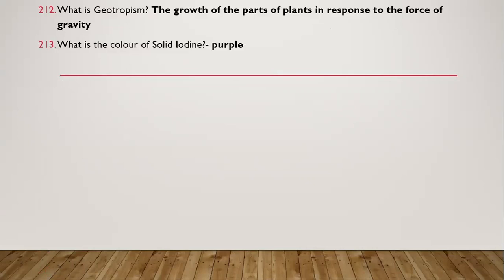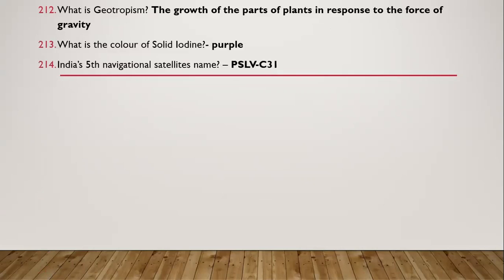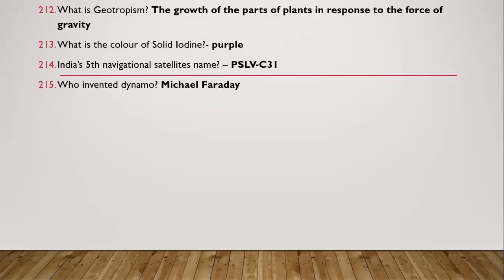Question 204: What is the color of solid iodine? Purple. Question 205: India's fifth navigational satellite name is PSLV-C31. Question 206: Who invented the dynamo? Michael Faraday.